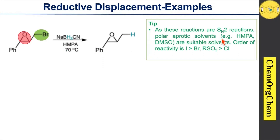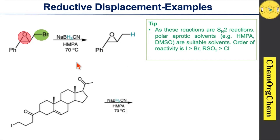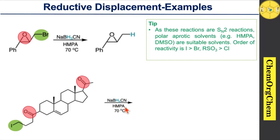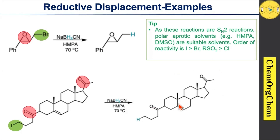Therefore, polar aprotic solvents such as HMPA or DMSO are more suitable. Consider this example: here you see one iodo group as well as two carbonyl groups present in the molecule. When subjected to sodium cyanoborohydride in the presence of HMPA solvent — which is a neutral solvent — it reduces only the iodo group, giving you the corresponding hydrocarbon framework.